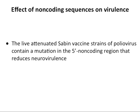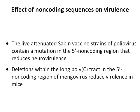Even non-coding sequences can affect virulence. A mutation in a vaccine strain of poliovirus is in the 5' non-coding region — it's the live attenuated vaccine that has mutations there making it not give you polio most of the time. Another example is within the 5' non-coding region of a picornavirus called mengovirus: a poly-C tract that, if you delete it, reduces virulence in mice. So you don't have to make a protein to influence virulence.